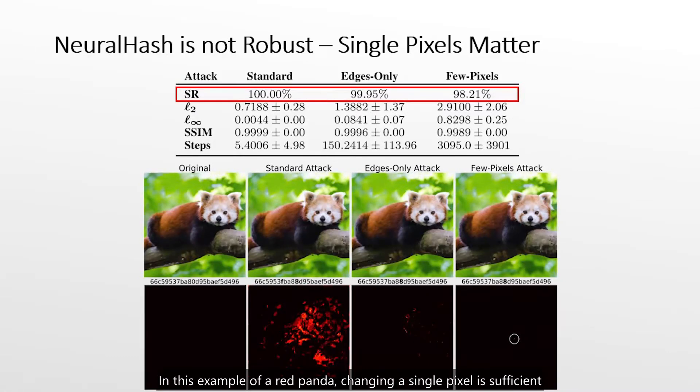All three attacks achieved high success rates with only slight image changes, hardly noticeable by humans. In the example of a red panda, changing a single pixel is sufficient to change the hash value of the image.